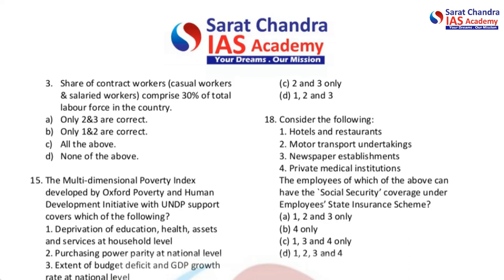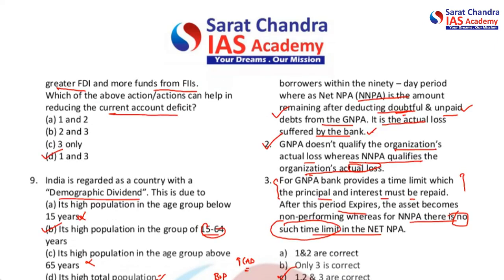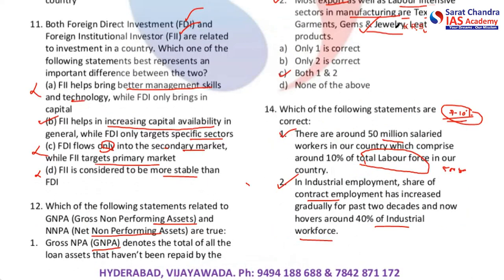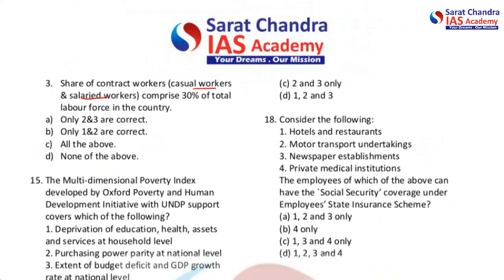The third statement: share of contract workers, casual workers, and salaried workers comprises 30 percent of the total labor force in the country. The second statement was specifically about industrial workforce — 40 percent being contractual. This third statement is about total labor force, where contract workers, casual workers, and salaried workers together comprise 30 percent. This is also correct based on statistics. So all three statements are correct and the answer is C.